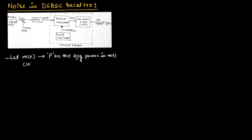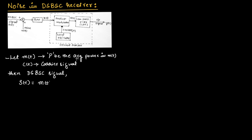Let C(t) be the carrier signal. Then the DSBSC signal can be represented as S(t) equal to M(t) multiplied with C(t). Therefore, we can write the DSBSC signal as S(t) = M(t) · Ac·cos(2π·fc·t). Let us call this equation number 1.